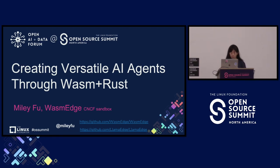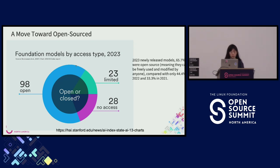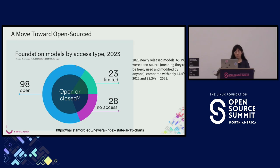Today I'm going to majorly talk about open source large language models, and when we do demos later we will also be using large language models that are open source, majorly hosted on Hugging Face. This is a report called the 2024 AI Index Report by Stanford University. According to that, last year the trend is that more large language models being launched are open sourced.